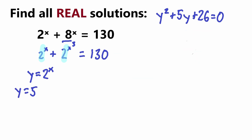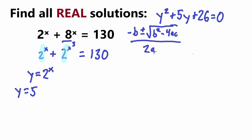To factor y² + 5y + 26 = 0 we'll use the quadratic formula, since factoring by inspection is not straightforward here. The quadratic formula is y = (−b ± √(b² − 4ac)) / 2a. Our values are a = 1, b = 5, and c = 26, so we get y = (−5 ± √(25 − 4·1·26)) / (2·1).